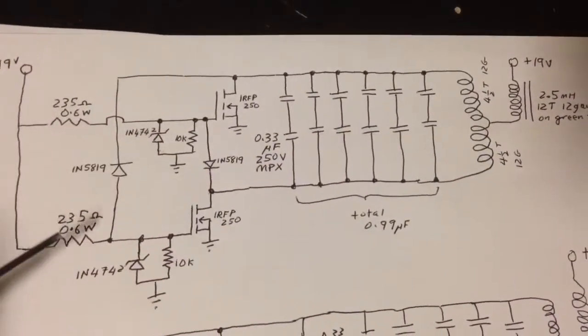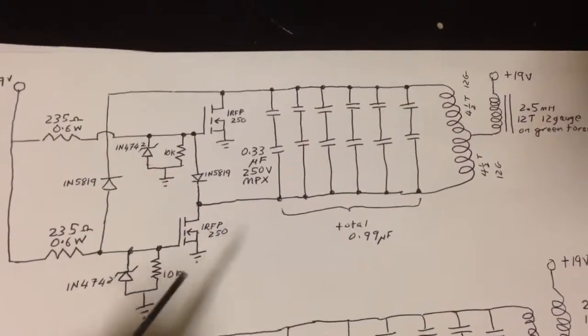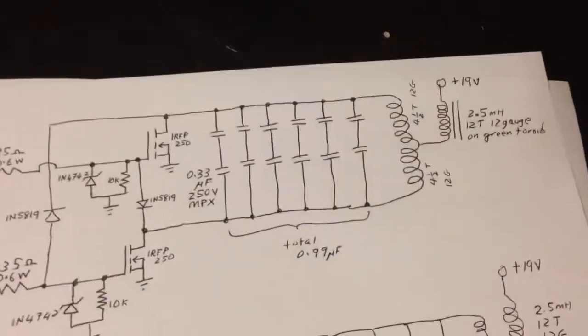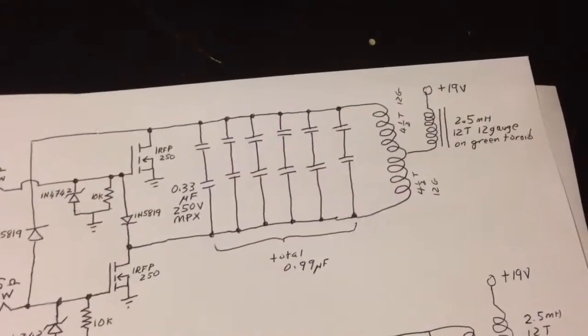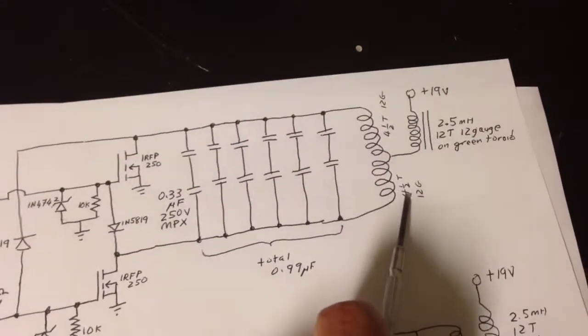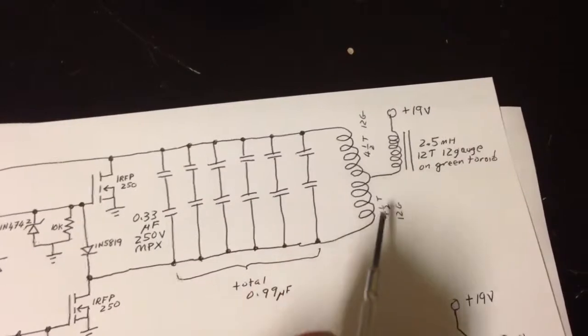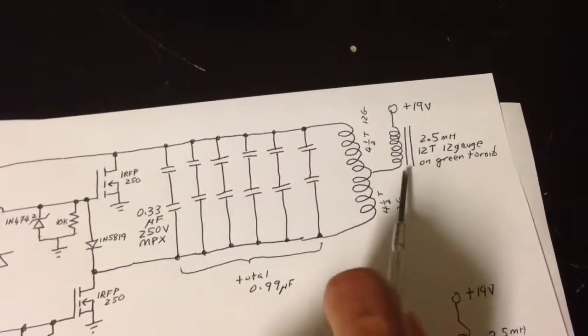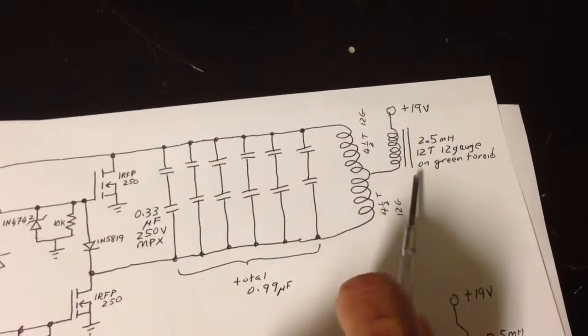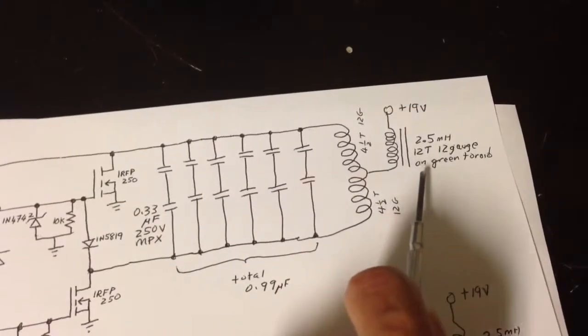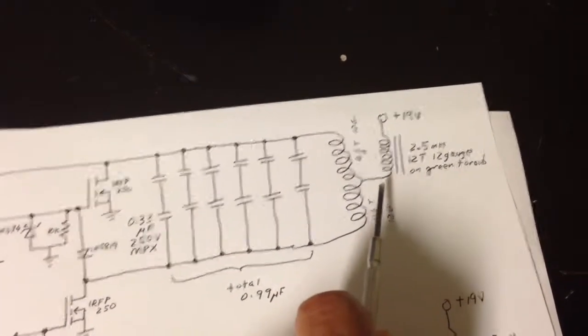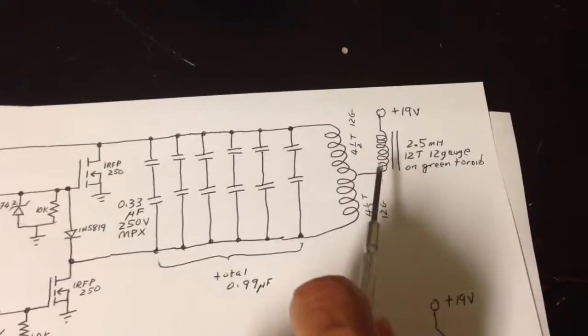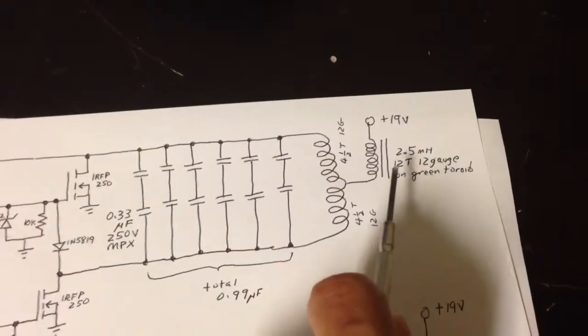The basic layouts are shown here, and that second attempt video shows rapid heating of a fairly large piece of metal using a 4.5 plus 4.5 turns of 12 gauge wire and using a 12 turn—actually on that video I used a flyback transformer core, but I changed that now to a 12 turn 2.5 millihenry toroid.